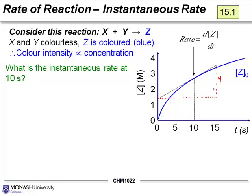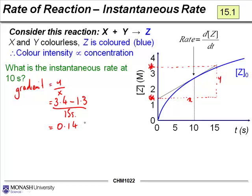If we draw a line up from 10 seconds and draw our tangent to the curve, we should be able to determine the instantaneous rate at that moment. I've drawn my little tangent here exactly from 0 seconds and my line here lines up with 15 seconds. The gradient is just given by the rise over the run, gradient equals y over x. If we took y as 3.4 minus 1.3, x is the time, 15 seconds, plug that into your calculator. The instantaneous rate at 10 seconds is 0.14.